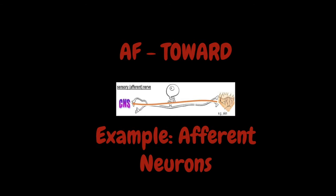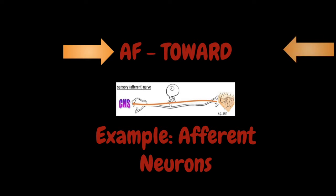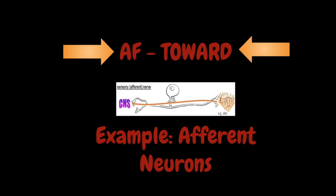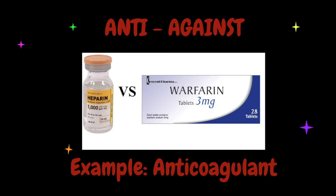AF is also a prefix that means toward. For an example, afferent neurons — the word ferent actually comes from the Latin word afferent, which means to carry. This AF prefix is going to let us know that these afferent neurons are going to conduct towards something. Afferent neurons conduct information towards the central nervous system.